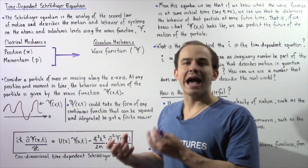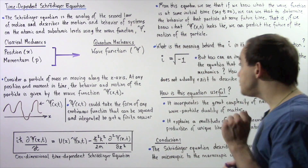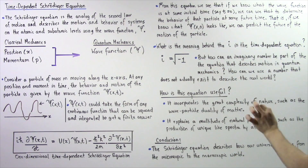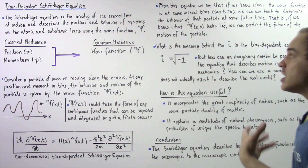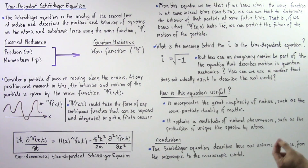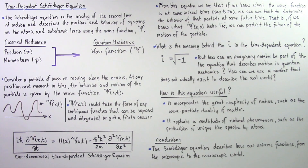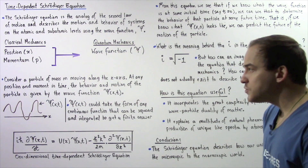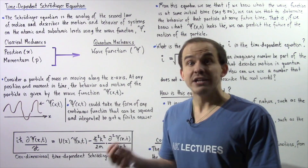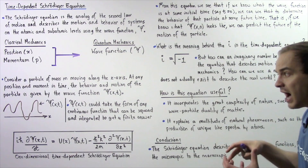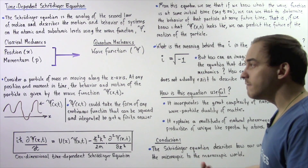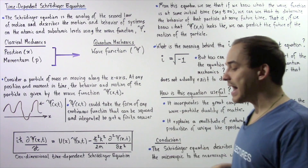It is a number that cannot actually be visualized. The question is: how exactly can an imaginary number be part of the equation that describes the motion of objects in quantum mechanics and ultimately the motion of objects in our universe? That is, how can we use a number that does not actually exist to describe the motion of objects that are real and do in fact exist? And here lies the complexity of our quantum mechanical theory.